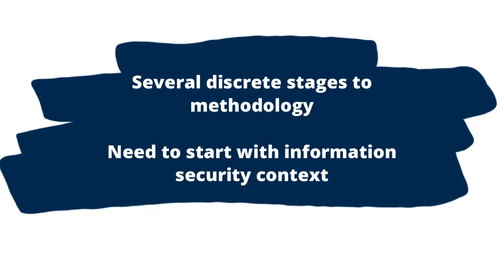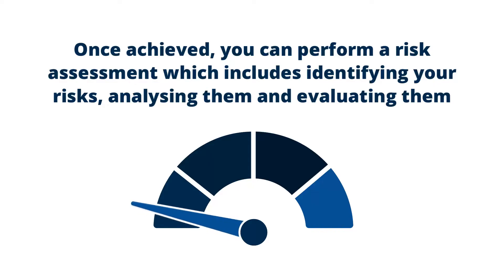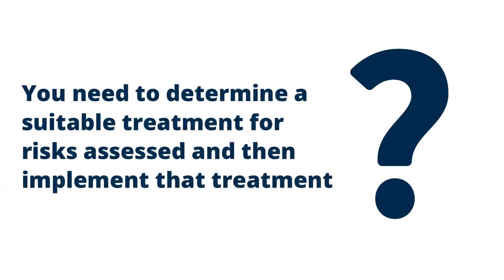There are several discrete stages of an ISO 27001 risk management methodology. First of all, it is important to understand the information security context of your organization. Once this has been achieved, you can perform a risk assessment which includes the need to identify your risks, analyze them, and evaluate them. You then need to determine a suitable treatment for the risks you have assessed and then implement that treatment.